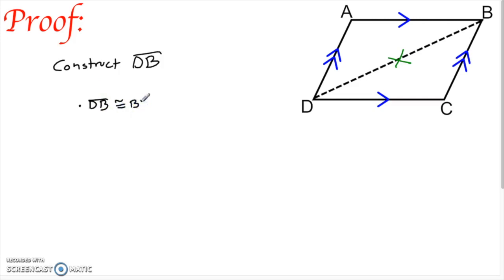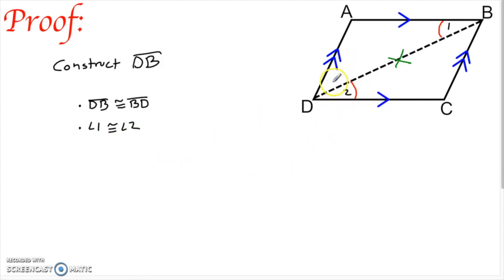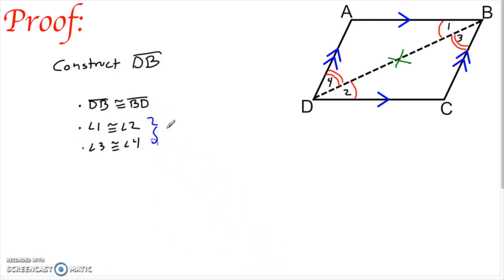Numbering the angles as one and two on the diagonal, those are alternate interior angles with respect to the top and bottom parallel sides. Since those lines are parallel and the transversal forms angles one and two as alternate interior, those angles are congruent. Similarly, angles three and four on the other end are alternate interior angles to the left and right parallel sides, so angle three is congruent to angle four.